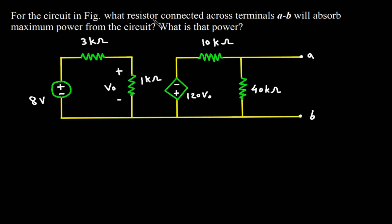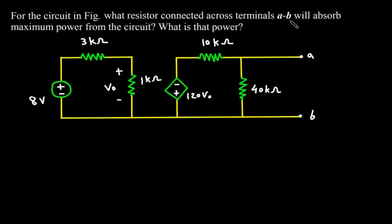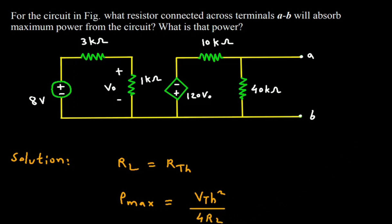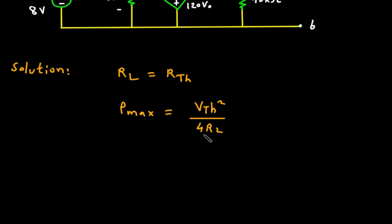For the circuit in the figure, what resistor connected across terminals A, B will absorb maximum power from the circuit? What is that power? Solution: we have to find the value of RL for maximum power. The condition for maximum power is RL equals RTH. Also, the maximum power is given by Pmax equals VTH squared divided by 4RL.